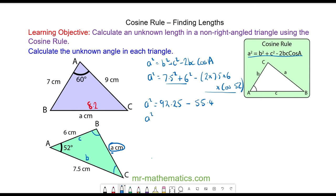So a squared is equal to 36.85 and to work out the length of a we square root both sides because the square and the square root will cancel. So a is equal to 6.1 centimeters to 1 decimal place.